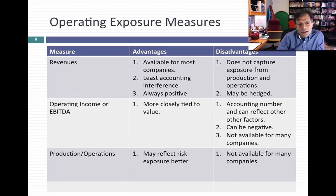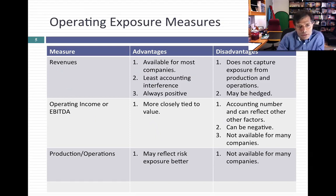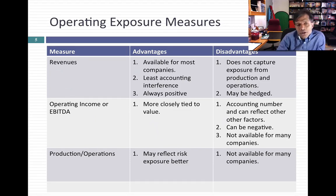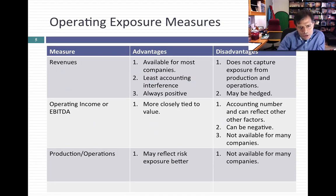The disadvantage of revenues is they might not capture your risk exposure — if your factories or mining operations are all in a very risky part of the world, and you may hedge your revenues. You could use operating income by region — it's probably more closely tied to value, but it's an accounting number, can be negative, and many companies don't break it down. You could even break it down by production or operations. For natural resource companies, you could argue that your exposure as an oil company doesn't come from where you sell the oil, but from where you get it — where your mining or oil reserves are. The disadvantage is companies don't always break down operations by region.